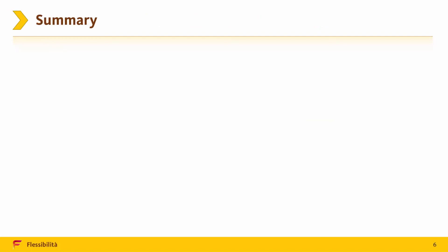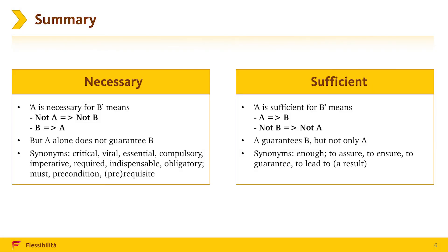Let us synthesize what we have learned today. A necessary condition is a must-have for achieving a certain result; however, it might not be enough. A sufficient condition, on the contrary, is enough for achieving a certain result; however, it might not be a must-have. Once again, have a look at the indicator words and make sure to notice them in the actual PST.